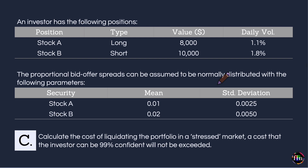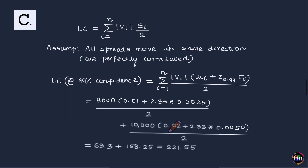The next question asks us to calculate the cost of liquidating the entire portfolio — both stock A and stock B — in a stressed market, at the 99% confidence level.